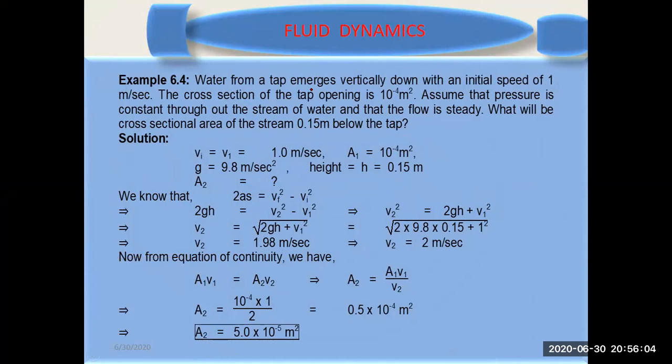So here, if you look at the problem: water from a tap emerges vertically down with an initial speed of one meter per second. The cross section of the tap opening is 10⁻⁴ m².